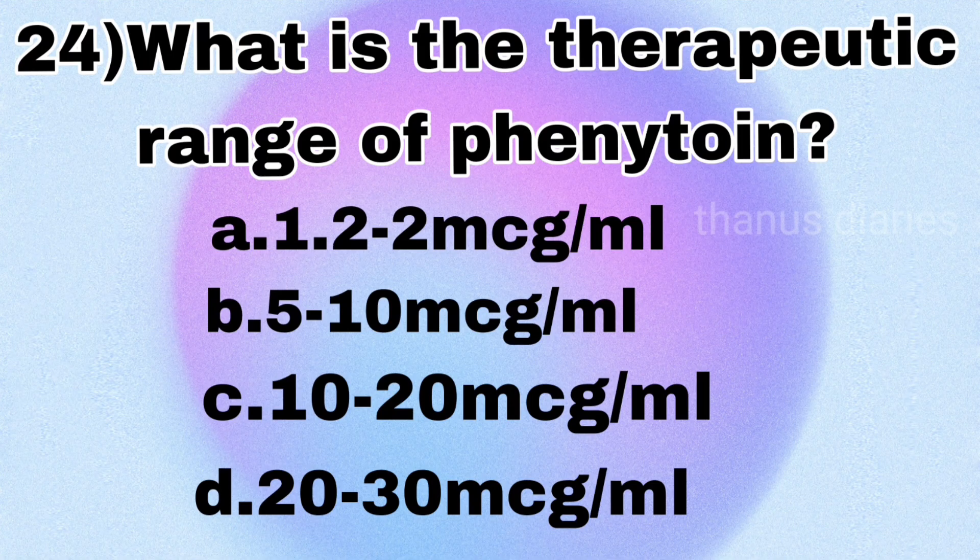Next question: what is the therapeutic range of phenytoin? — 1 to 22 microgram per ml, 5 to 10 microgram per ml, 10 to 20 microgram per ml, or 20 to 30 microgram per ml?